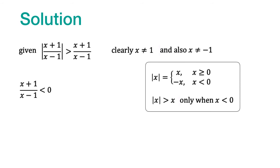Now, this implies that the numerator and the denominator must have opposite sign and that also implies that the product of x plus 1 and x minus 1 must also be negative.